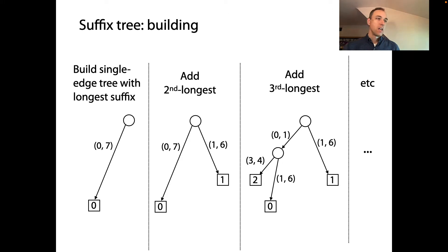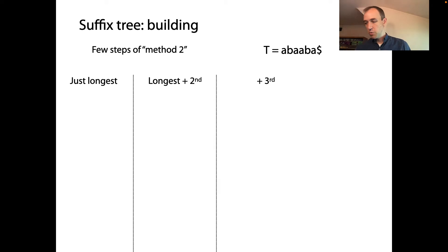We'll start with the longest suffix, the suffix that consists of the entire text T, and we'll make a trivial tree data structure that just has a root, a leaf, and then one edge corresponding to that suffix. Then we'll add more suffixes from longest to shortest, we'll elaborate this tree adding branching, adding more leaves, etc. So let me be very explicit about the first few steps of this tree building process for this example, our favorite example of ABAABA$.